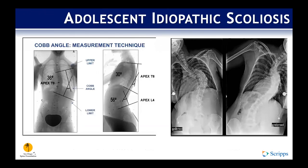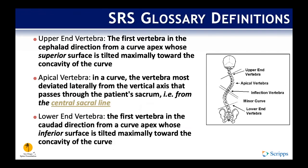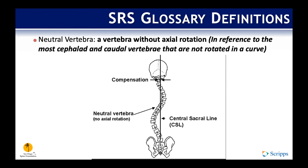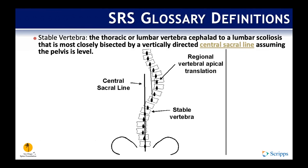Workup includes the Cobb angle and lateral bending films. When classifying AIS, it's important to speak the same language. The upper end vertebra is the one whose superior surface is tilted maximally toward the curve. The apical vertebra is the most deviated laterally. The lower end vertebra's inferior surface is pointed toward the concavity. The neutral vertebra references rotation, while the stable vertebra is most closely bisected by the central sacral vertical line on a standing AP or PA radiograph.